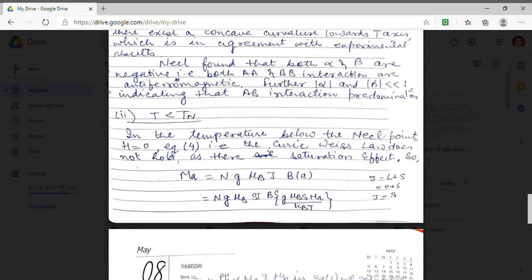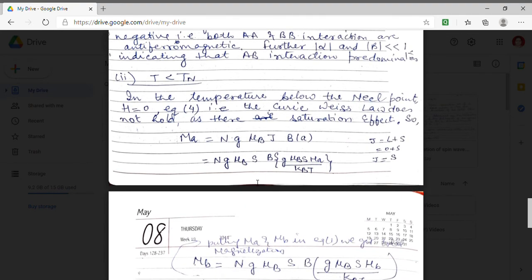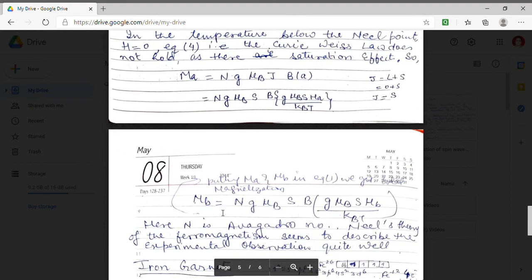Hence instead of J I am substituting S. This is the formula for molecular field at A site. Similarly we can obtain the molecular field at B site. N being the Avogadro number. Hence this Neel theory is able to obtain, able to describe the ferromagnetism which is in accordance with the experimental observations.